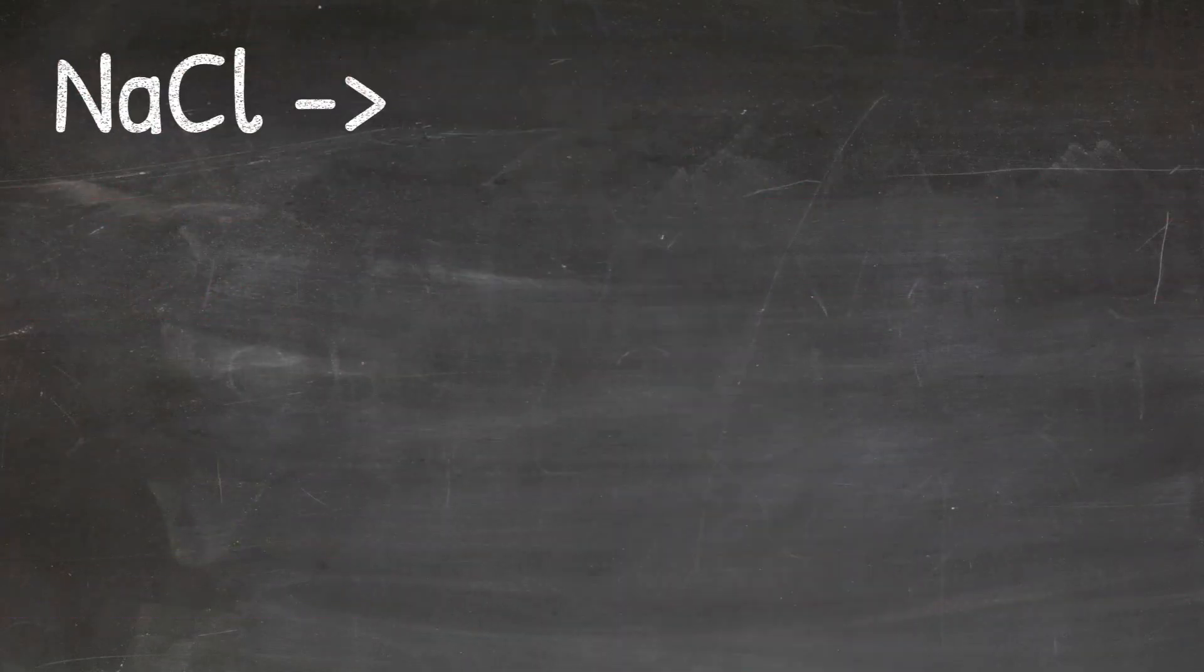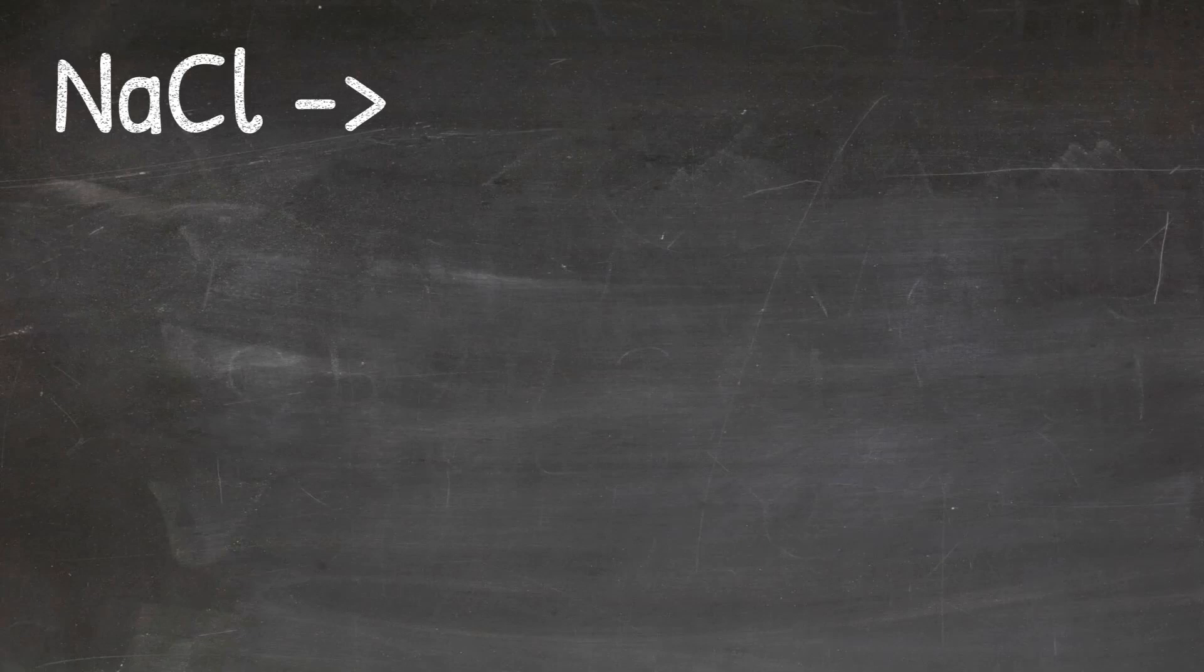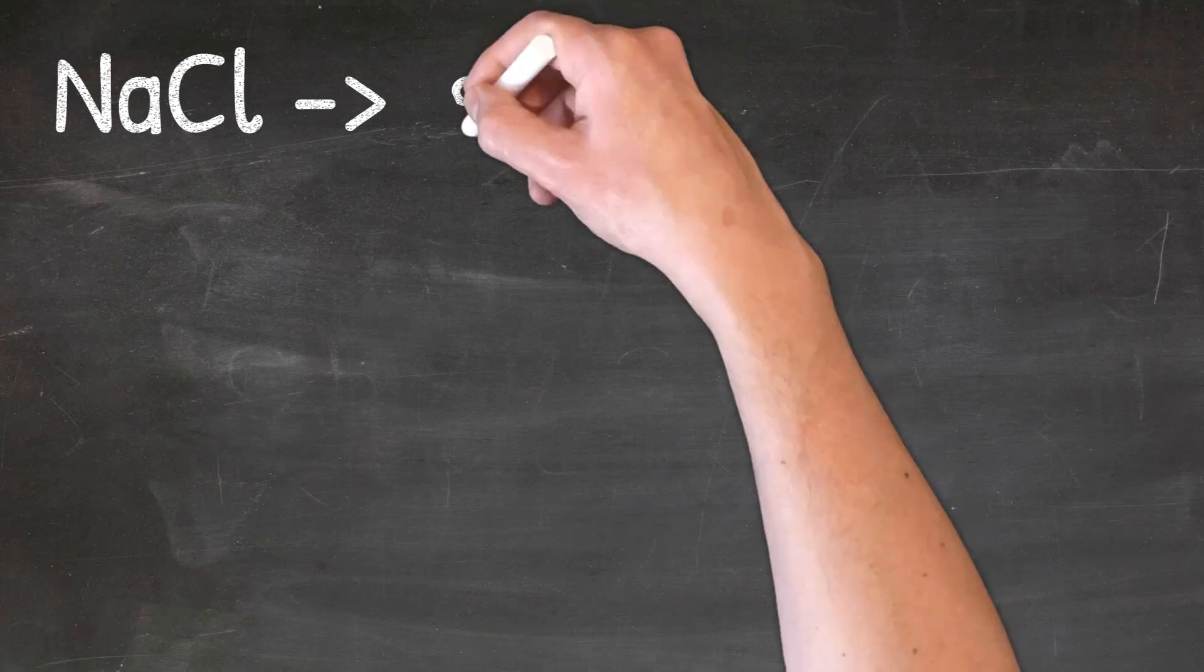In our first example, we'll look at NaCl. The two elements that make up NaCl are sodium and chlorine. So the first element, sodium, will keep its name, so I'll just put sodium.